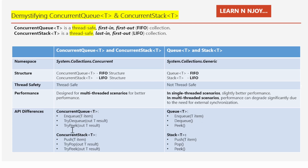Now let's talk about ConcurrentStack. It has methods like Push(TItem), TryPop(out TResult), and TryPeek(out TResult). Push adds an item to the top of the stack. TryPop tries to remove and return the item at the top of the stack, returning a Boolean indicating success or failure. TryPeek tries to return the item at the top without removing it. Whereas Stack<T> has methods like Push(TItem), Pop, and Peek — it does not have Try versions. Pop removes and returns the item at the top; Peek returns the item without removing it.